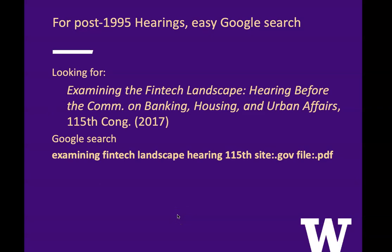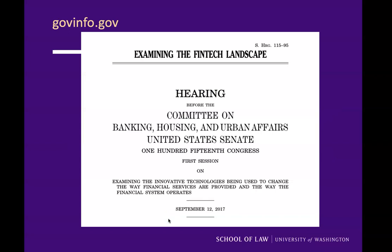For hearings in the last 25 years, after 1995, you can also use Google. Hearings, according to the Blue Book, are cited by title and they don't have that unique numerical identifier, so you search for words. For instance, if we're looking for 'Examining the Fintech Landscape, Hearing before the Committee on Banking, Housing, and Urban Affairs,' we can search for: examining fintech landscape hearing 115th site:.gov file:.pdf. And we pretty quickly get a PDF of 'Examining the Fintech Landscape' hearing from govinfo.gov.